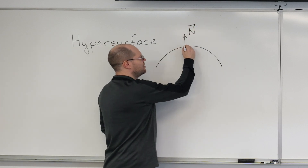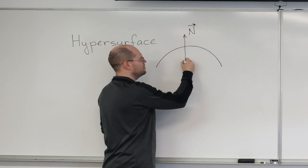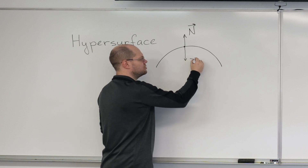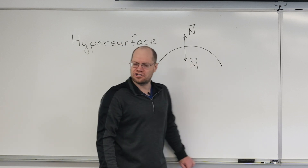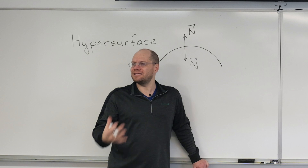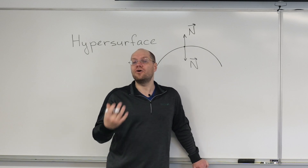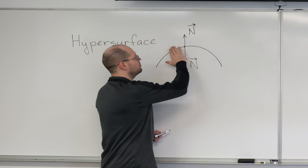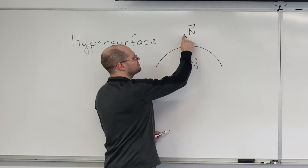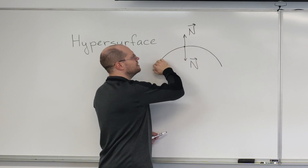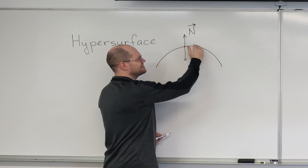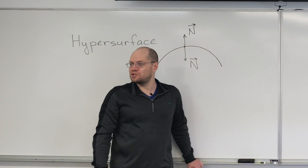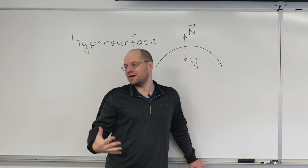We can call it the unit normal, and the only choice is the sense. Does it point this way, or does it point the other way? Both choices are equally good and it is completely arbitrary. The only thing that we're able to do is say we'll choose the normal to point in this direction. What we then want to do is, when we extend this idea to other points, we want to do it in a continuous way.